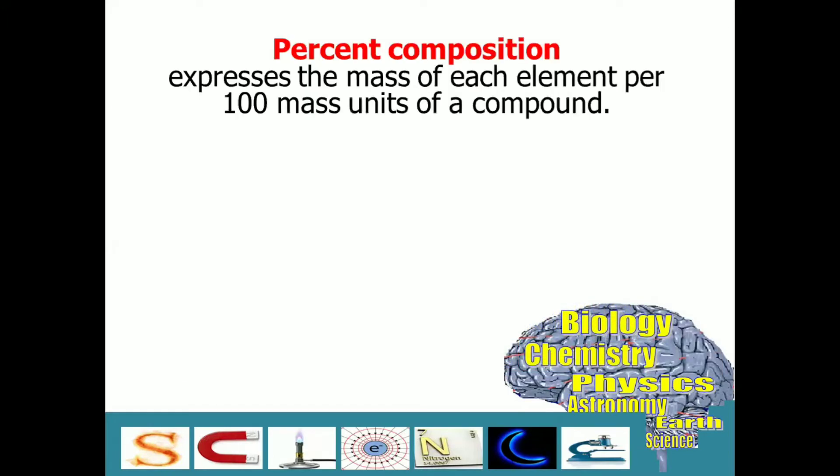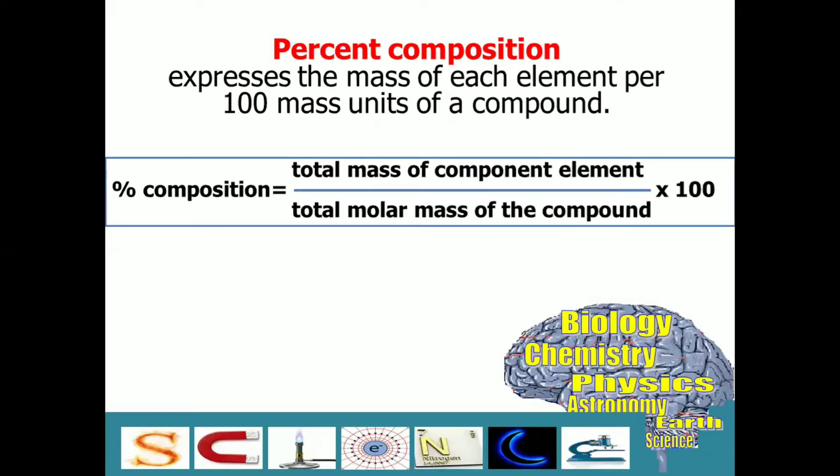So, what is percent composition? Percent composition expresses the mass of each element per 100 mass units of a compound. And for us to determine this, we use this formula. Percent composition is equal to the total mass of component element divided by total molar mass of the compound times 100.